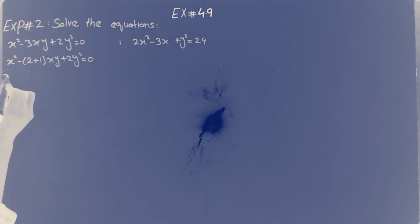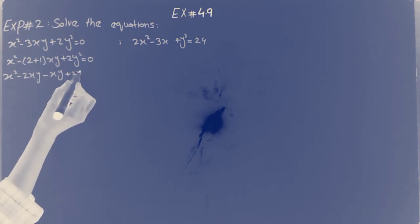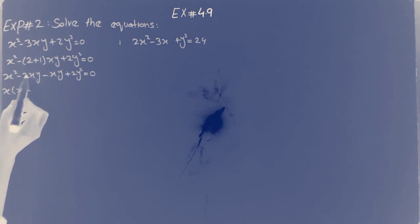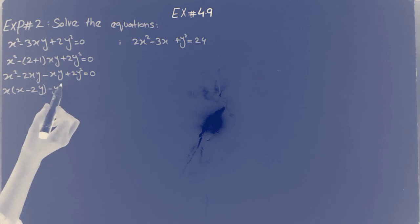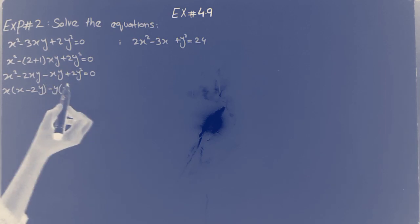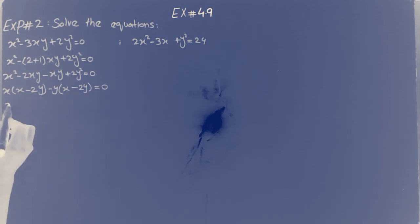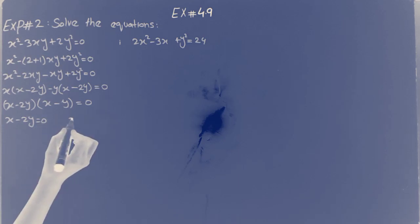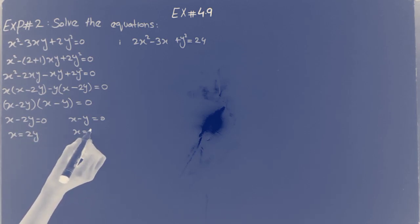Taking common factors: x(x − 2y) minus y(x − 2y) equal to 0, giving (x − 2y)(x − y) equal to 0. Therefore x − 2y = 0, so x = 2y, and x − y = 0, so x = y. These are equations 3 and 4.